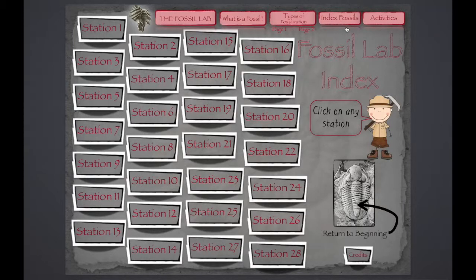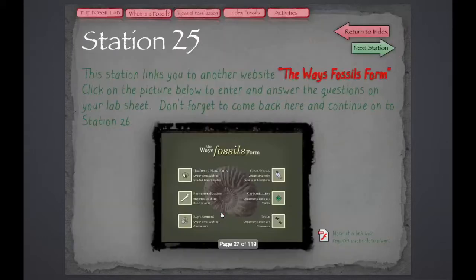Stations 1 through 24 are all contained within this PDF document, so no internet connection is required to view all of this information. But when we get to Station 25 through 28, we're taken out to the web where we are going to need an internet connection.